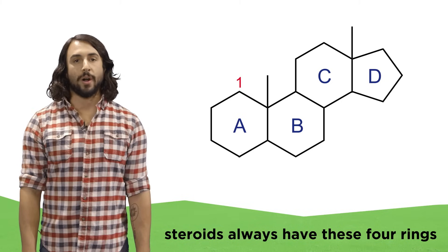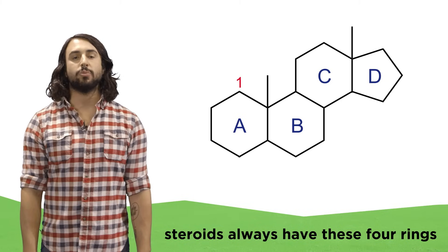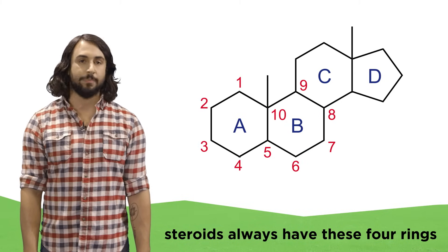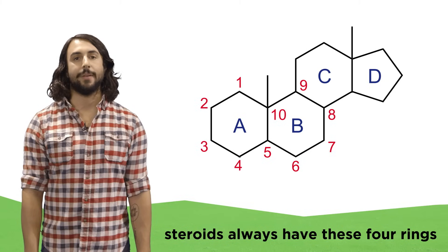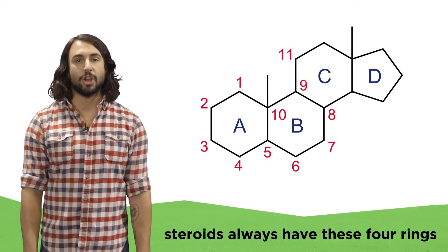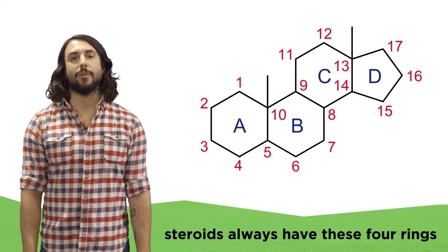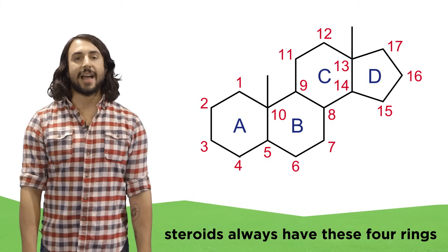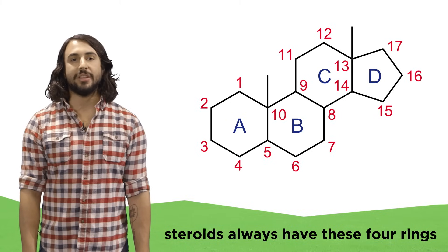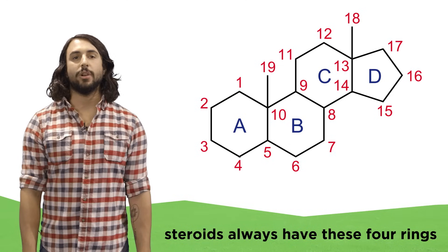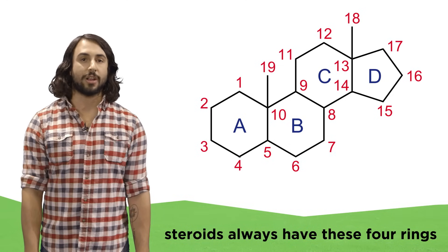This is carbon 1, and numbers 1 through 10 will wrap around rings A and B this way. Then carbon 11 jumps over to ring C and we wrap around rings C and D, lastly numbering these two methyl groups like this. All the steroids we examine will be based on this structure.